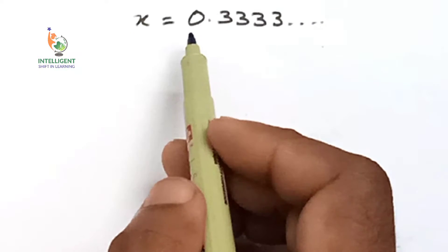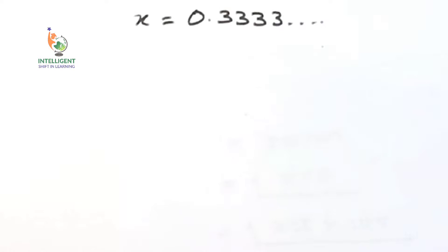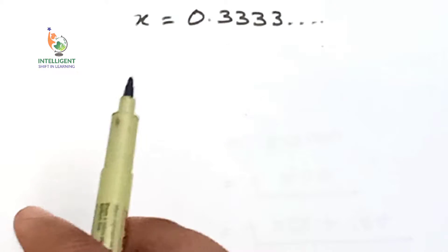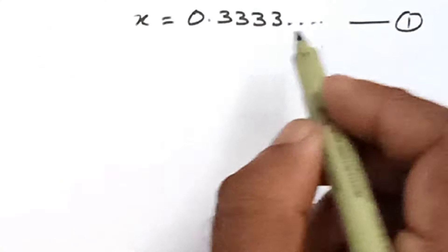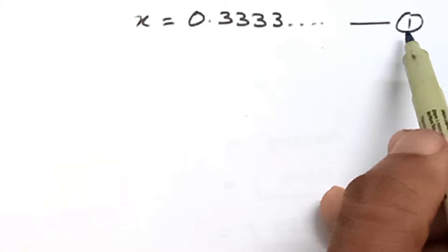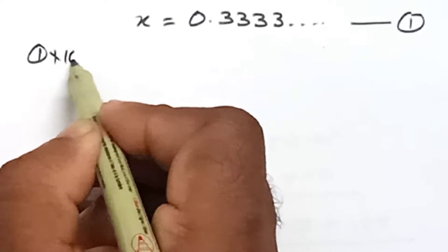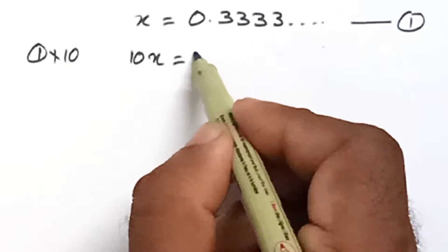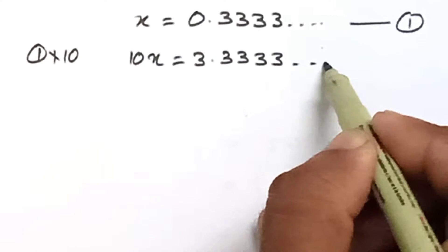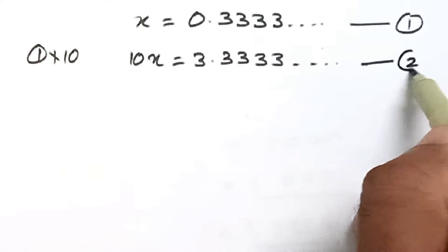We can observe in this decimal expansion only the digit 3 is repeating. Since only one digit is repeating, we can multiply both LHS and RHS by 10. We take this as equation number one. Multiplying by 10 on both sides gives us 10x is equal to 3.333... — consider this as equation number two.